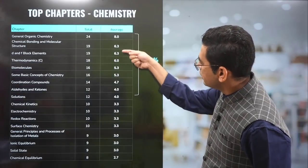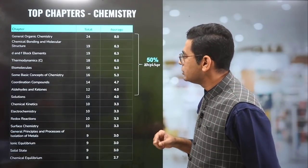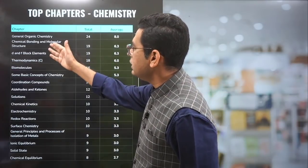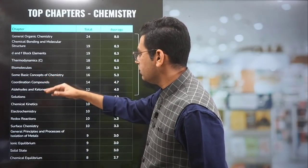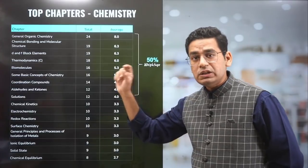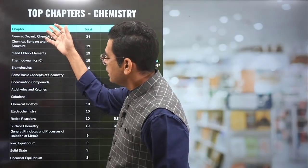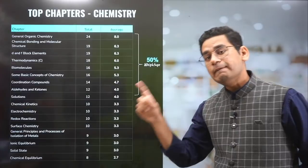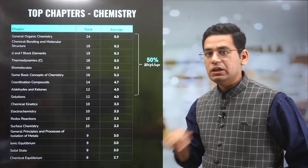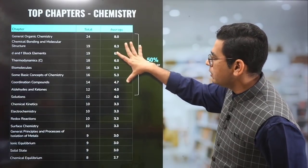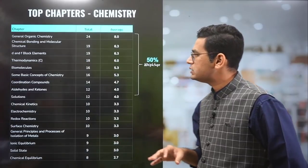Now for chemistry — again 9 chapters comprise 50% of the weightage. The highest chapters are: GOC (General Organic Chemistry), chemical bonding, D&F block, thermodynamics, biomolecules, mole concept, coordination compound, and aldehydes/ketones/solutions. All of these are important for JEE Mains as well. So if you are preparing well for JEE Mains, you should be able to get good marks at COMEDK chemistry as well.